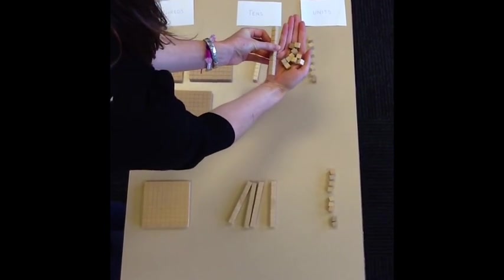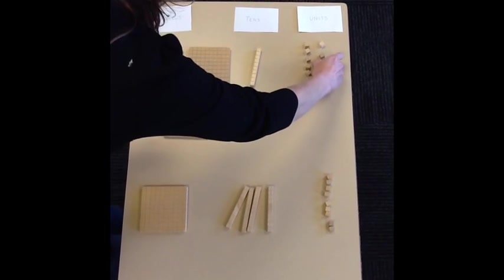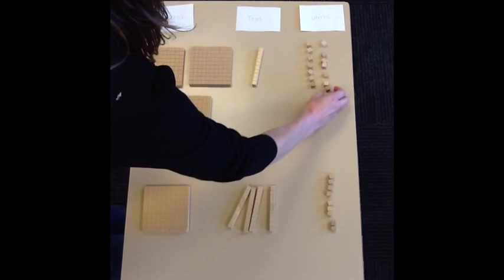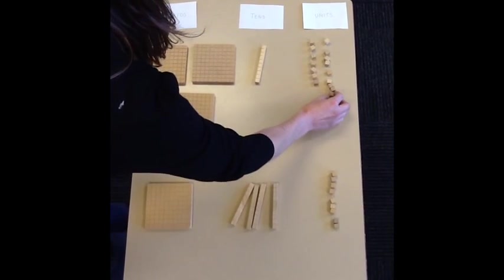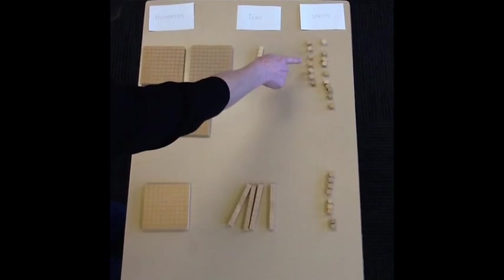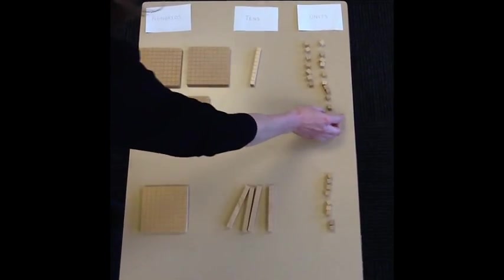And they mean the exact same thing. So now our 7 becomes 17. And you can see that we can actually subtract now, because our larger number is at the top. So 17 take away 9, we can do it.